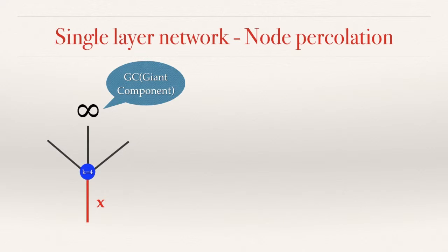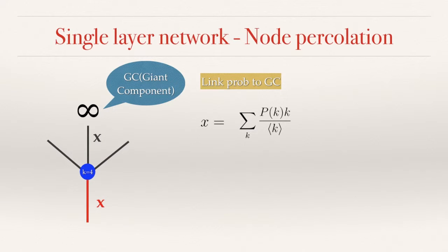So x is the probability for the initial link in red, and also the probability of finding the upper-middle link leading to the giant cluster. Now we can write down the self-consistent equation for x: the probability of finding a random link leading to the giant cluster equals the probability of finding a link that leads to a node with degree k, multiplied by the probability that at least one of the other k-1 links leads to the giant cluster. Since we are talking about node percolation, there is a probability p that the initial node found is still present, so we multiply the right-hand side by p to get the complete equation for x.